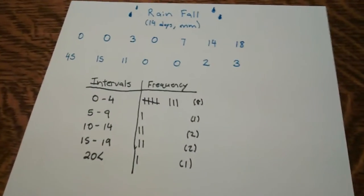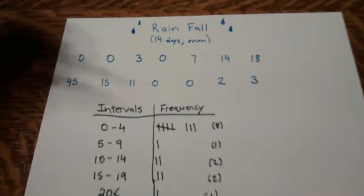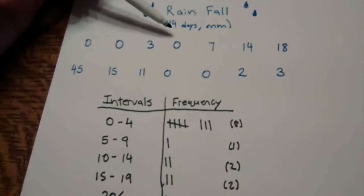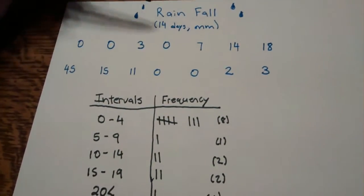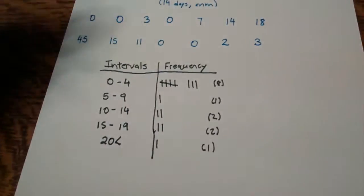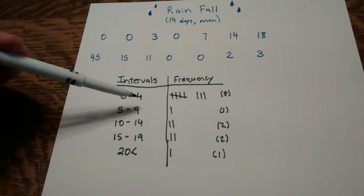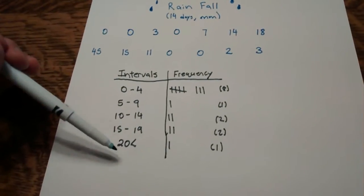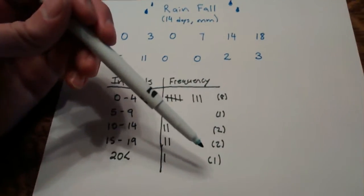And then lastly, I threw in this one as well. This is like a real life example. So let's say I charted rainfall in Kingston for the last 14 days, looking at millimeters of rainfall. So I made my intervals, 0 to 4 millimeters, 5 to 9, 10 to 14, 15 to 19, and 20 plus. I filled it in.